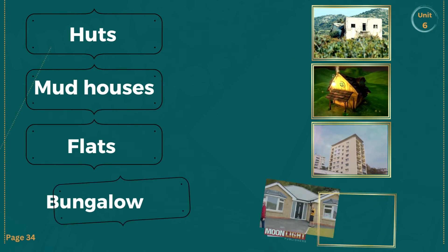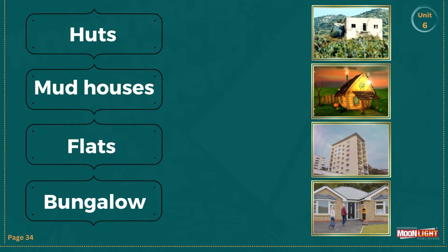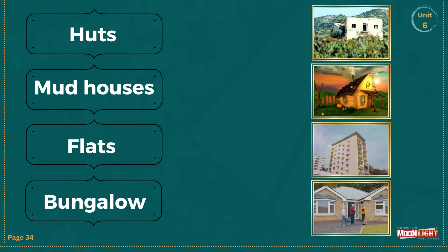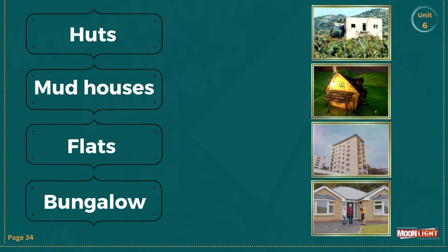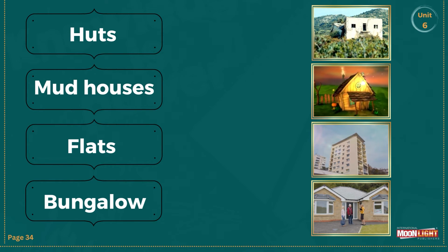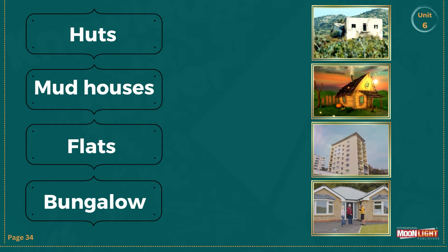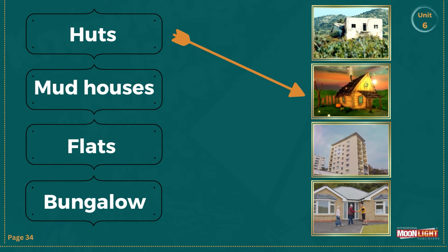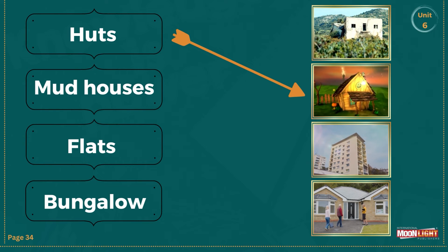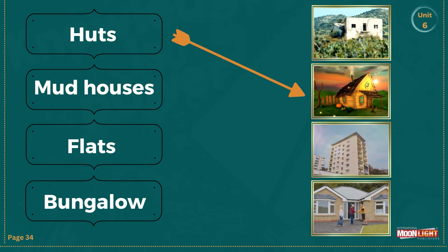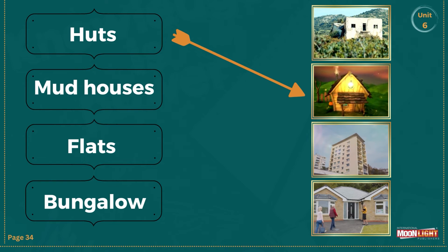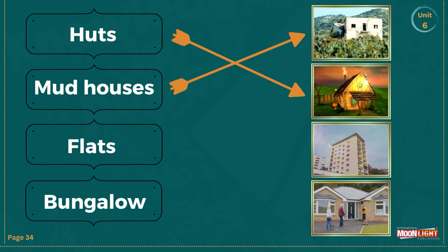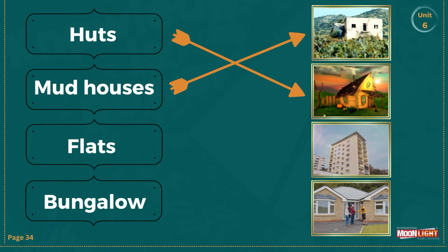Students, there are two different exercises on page number 34. The first exercise is: match the name with the relevant pictures. Number one is hut — students, can you tell me which of these four pictures is the hut? This is a picture of a hut. Number two is mud house — can you tell me which one is the mud house? This is a picture of a mud house.